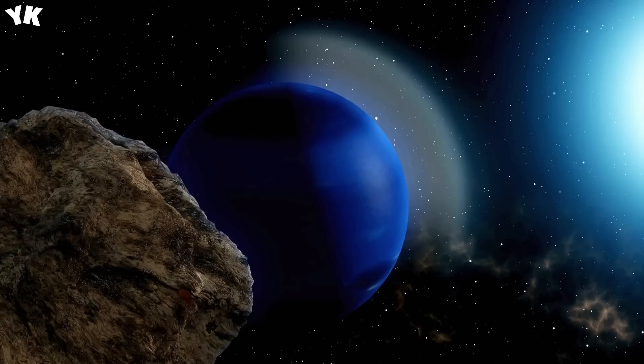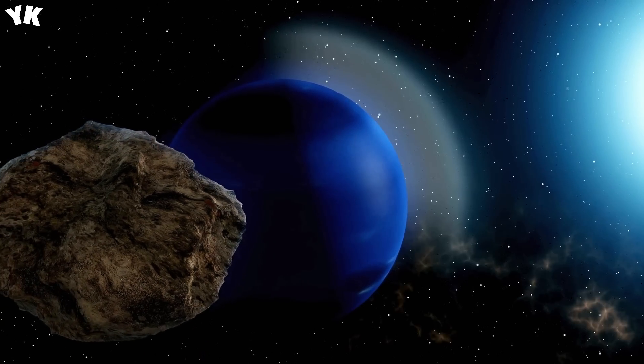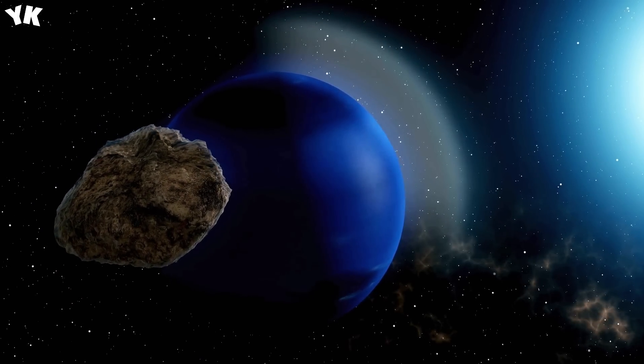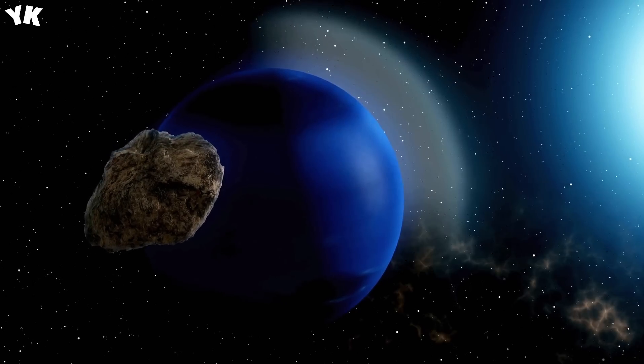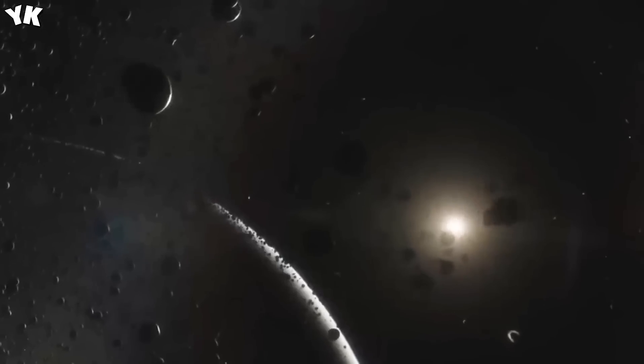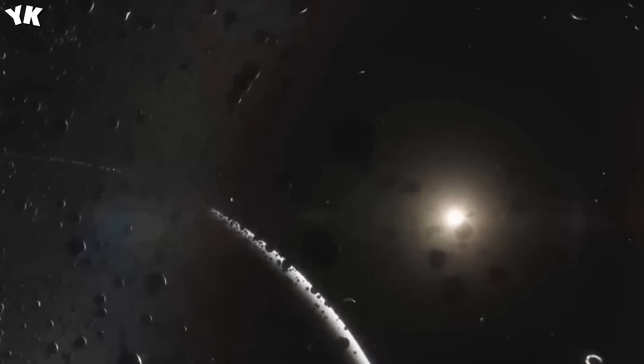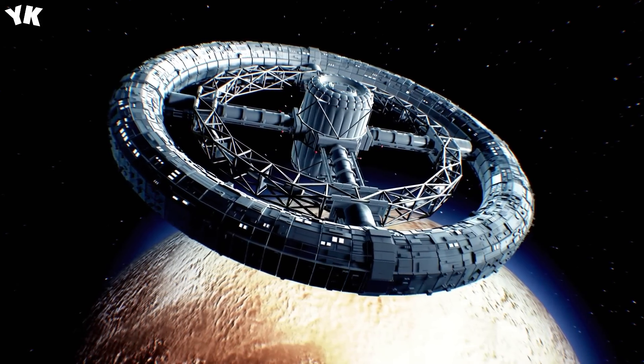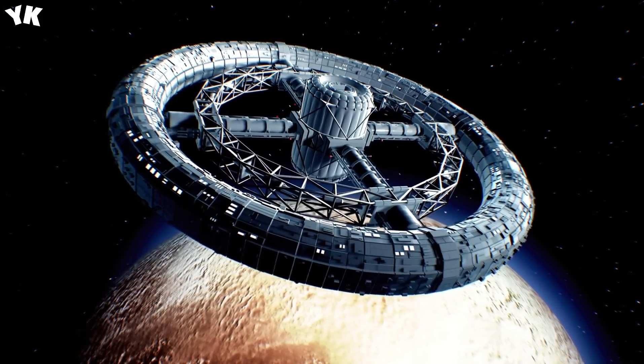Additionally, Jupiter's immense gravity exerts a substantial influence, while Saturn's impact, though smaller, also plays a role. Through comprehensive tests, scientists have shown that the combined effects of Neptune, Jupiter, and Saturn ensure the safe and stable movement of Pluto in space for billions of years.